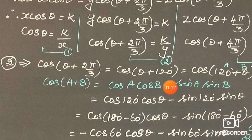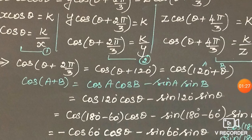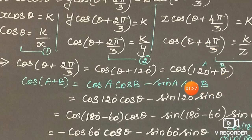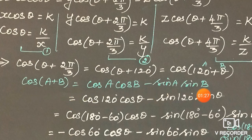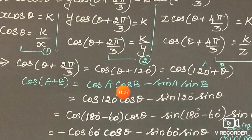Cos(θ + 120°) = cos(120 + θ). We apply the cos(A + B) formula: cos(A + B) = cos A·cos B − sin A·sin B, where A = 120 and B = θ.